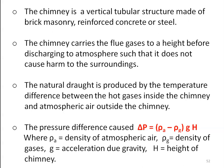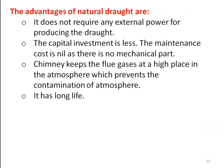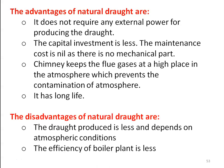Natural draught is very easy to maintain and a simple method. Advantages: it does not require any external power to produce draught, as it is naturally produced by temperature difference. The capital investment is less, maintenance cost is nil as there are no mechanical parts. The chimney keeps the flue gases at a high point in the atmosphere, preventing contamination, and has a long life. Disadvantages: the draught produced is less and depends on atmospheric conditions and chimney height, so the efficiency of the boiler plant is less. In modern boilers, only the artificial draught system is used.